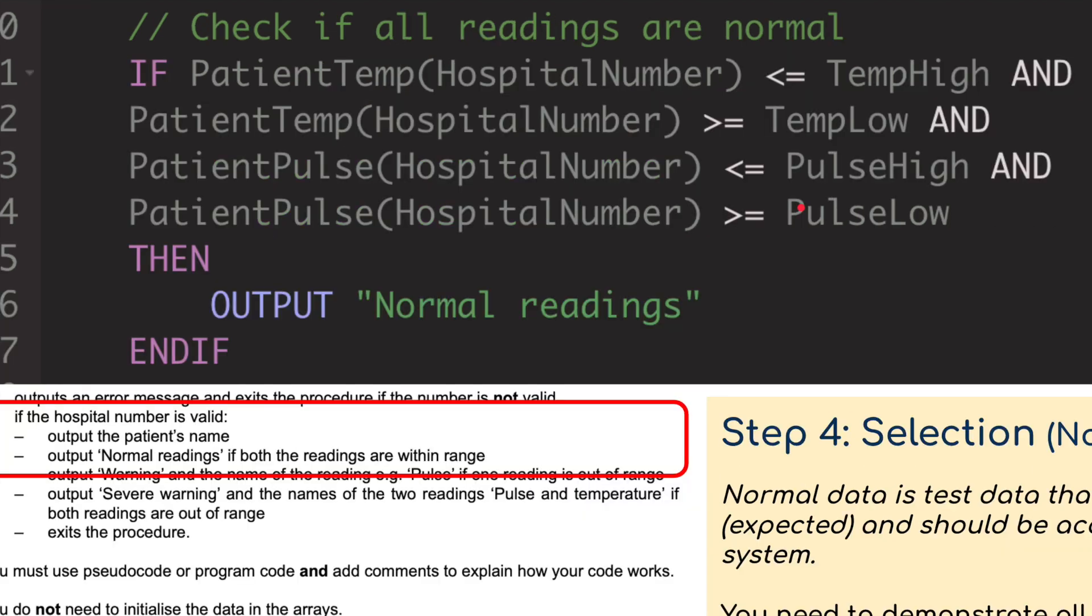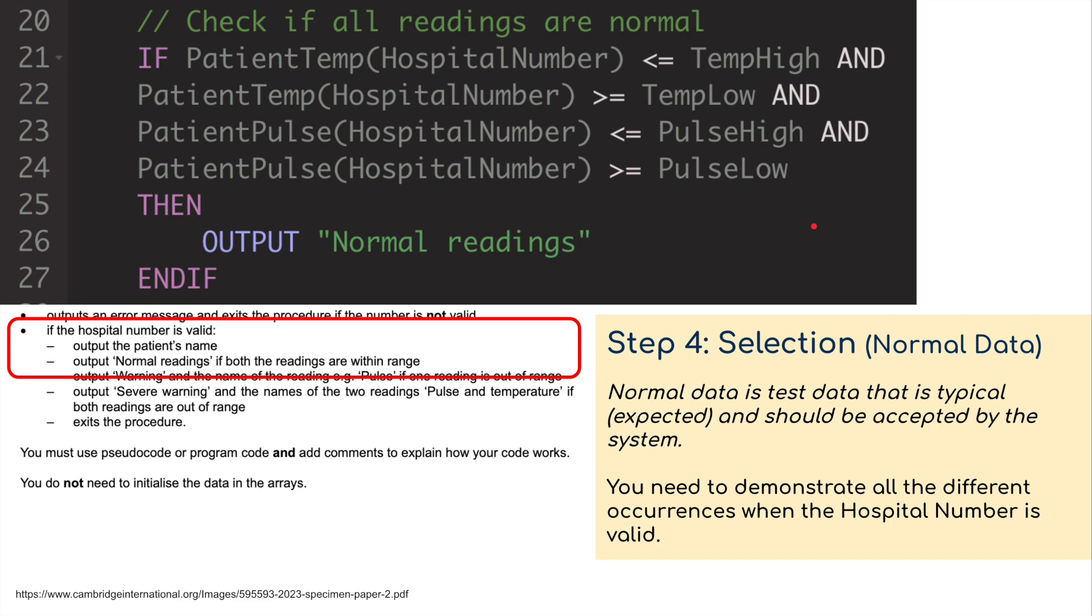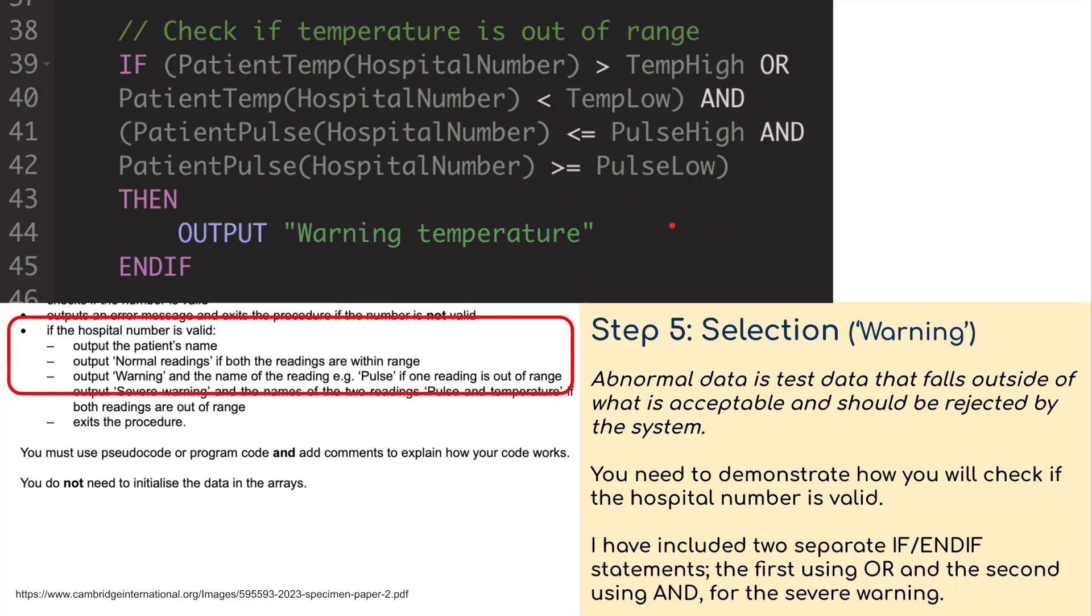Then we're going to start with the readings. First of all, we're going to look at normal data. If the patient temp is less than or equal to temp high and greater than or equal to temp low, and the pulse is less than or equal to pulse high and greater than or equal to pulse low, then output normal readings. That's the first selection, the first if-then statement for normal readings.